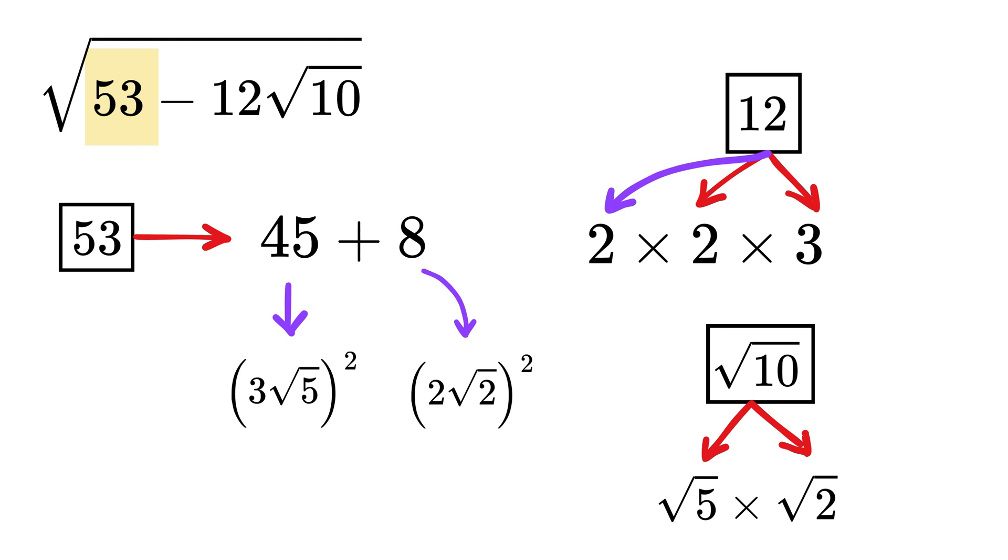Now here comes the magical moment. We have 3 root 5 here, and we also have a 3 and a root 5 here. Then we have 2 root 2 here, and a 2 and a root 2 here as well. We only have 1 extra 2 here, right?